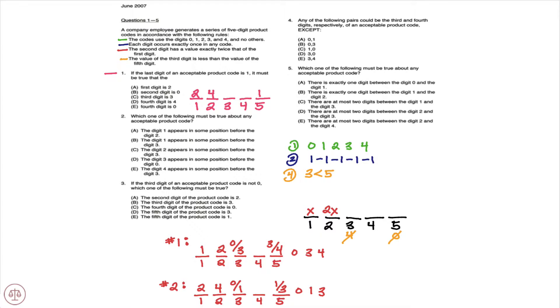Now what do we have left? We have 0 and 3. Well, we know that the third digit must be less than the fifth digit which means 0 must be third, leaving 3 fourth.